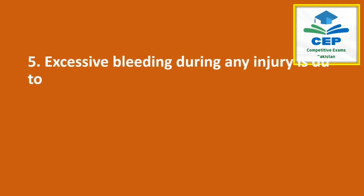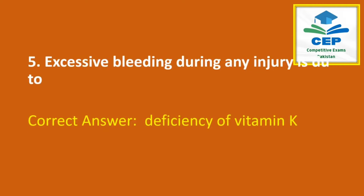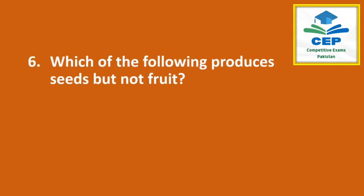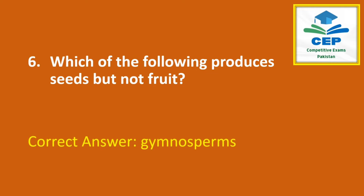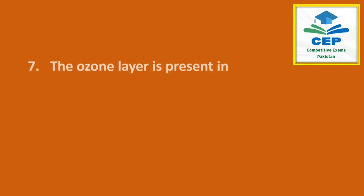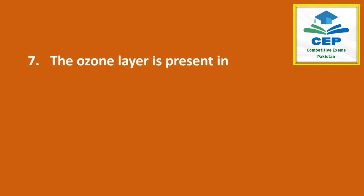Excessive bleeding during an injury is due to deficiency of vitamin K. Which of the following produces seeds but not fruit? The correct answer is gymnosperms. The ozone layer is present in the stratosphere.